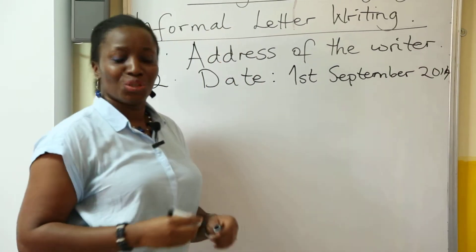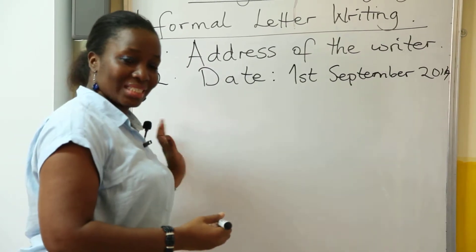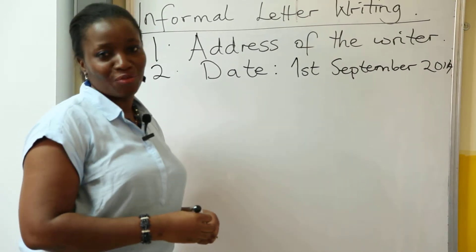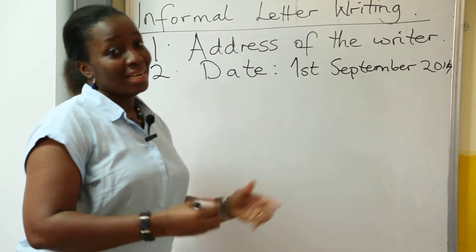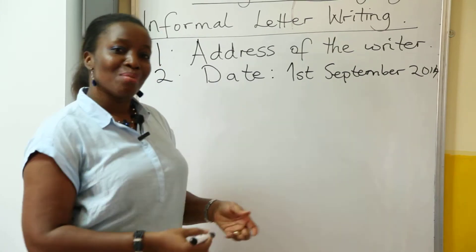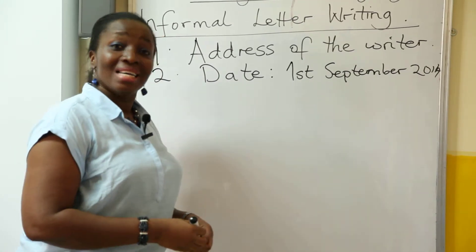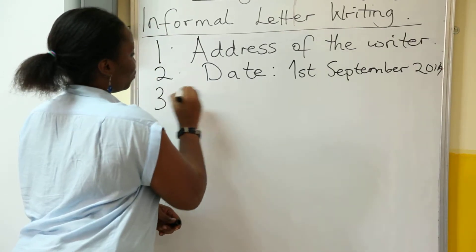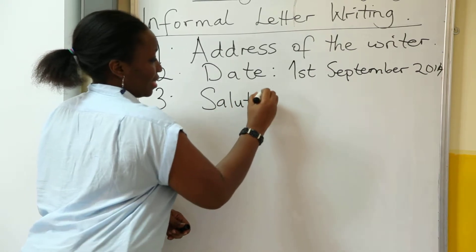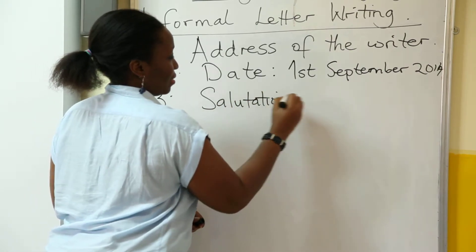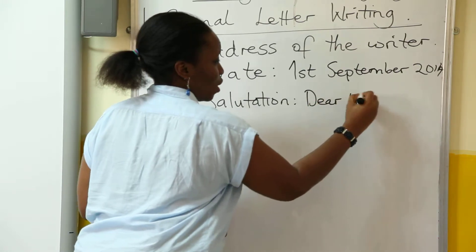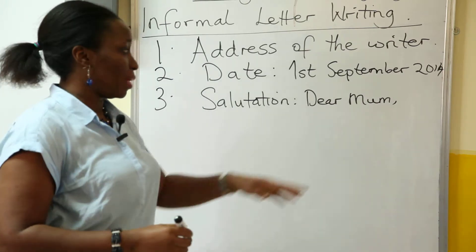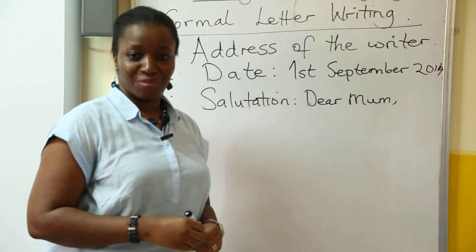Now that you've written your address and your date, the next thing you would do is to greet. How do you greet in an informal letter? You say: dear mom, my dear dad, dear brother, dear sister. In letter writing, it's called the salutation. So the third thing you do is your salutation — for example, 'Dear mom,' if you're writing to your mom. Always remember to put the comma after the salutation.